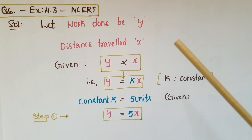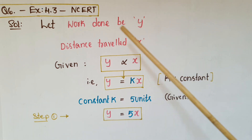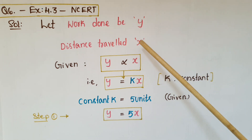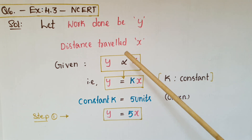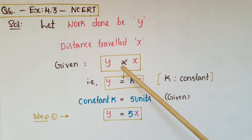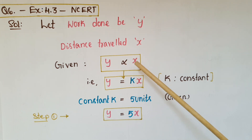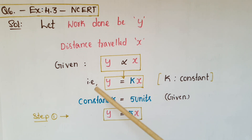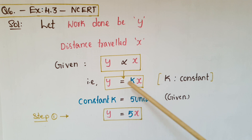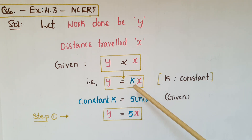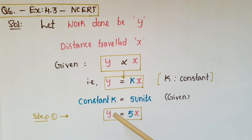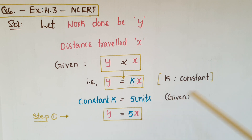Now for the solution to problem six: let work done be y and distance traveled be x. Work done is directly proportional to distance traveled, so y is proportional to x, which means y equals kx, where k is a constant. It is given that k equals five units, so we can write y equals five x. This is the linear equation.